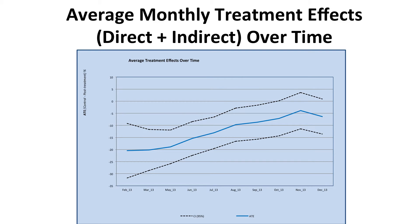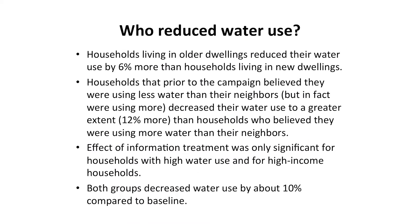This next figure shows how the combined direct and indirect effects of the information treatment decline over time. Still, at the end of the 12-month experiment, the combined treatment effect for all households is about five percent; the dashed lines are the 95 percent confidence intervals. The research team also analyzed the characteristics of households most likely to reduce their water use in response to the social norms information. Households living in older dwellings reduced their water use by six percent more than households living in new dwellings. Interestingly, households that prior to the campaign believed they were using less water than their neighbors, but in fact were using more, decreased their water use by 12 percent more than households who believed they were already using more water than their neighbors.